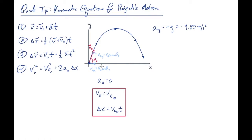If we plot the x components of velocities on the path, everywhere the projectile is moving sideways at the same rate. That means if you follow a shadow along the ground, it moves at a constant speed, covering a distance delta x equals v-naught x times t.